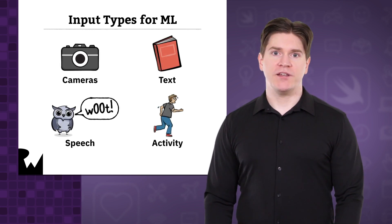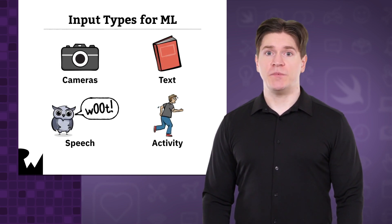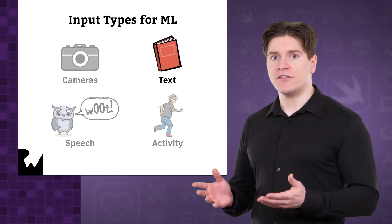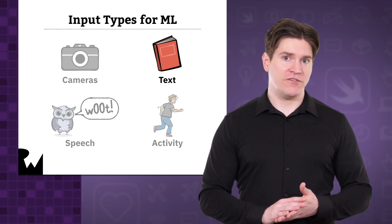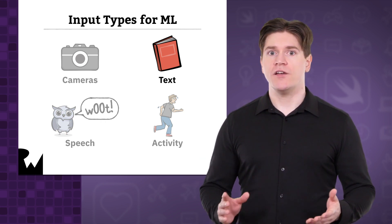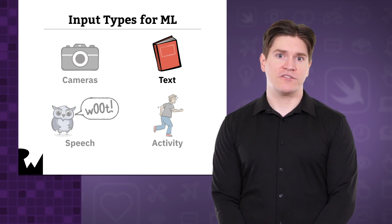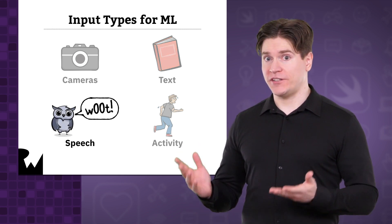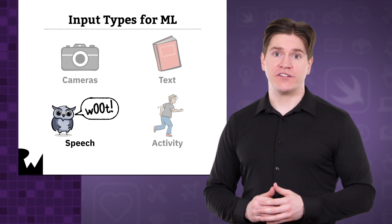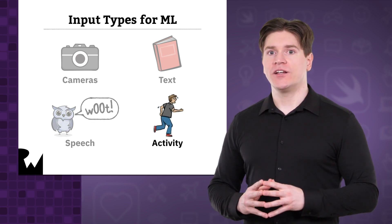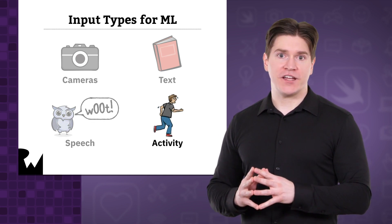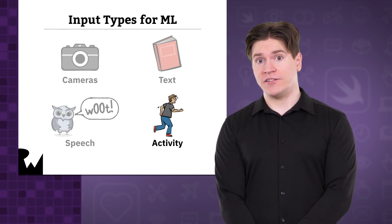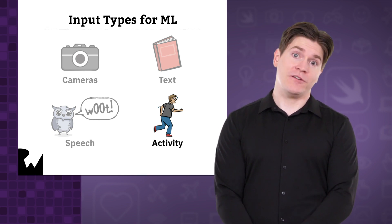The other three main categories of input are text, speech, and activity. For example, you can classify and analyze text written or received by the user in order to understand its meaning or sentence structure. You can convert speech into text for dictation, translation, or Siri-style instructions. And you can classify the user's activity as sensed by the device's gyroscope, accelerometer, magnetometer, altimeter, and GPS.